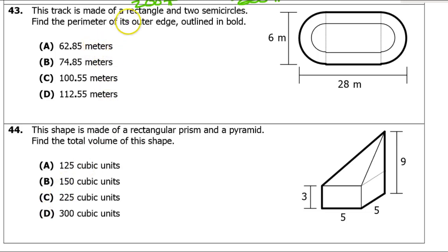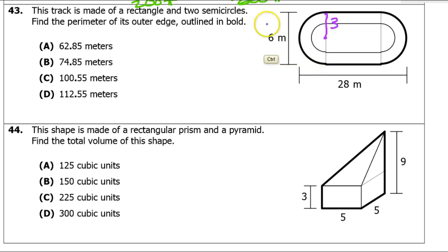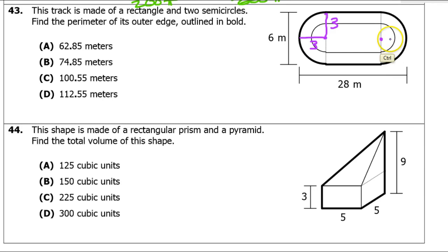Number 43: this track is made of a rectangle and two semicircles — find the perimeter of the outer edge. The diameter of each semicircle is 6, so the radius is 3. Since the radius extends 3 on each side, taking 6 away from the total length of 28 leaves 22 for each straight side of the rectangle.